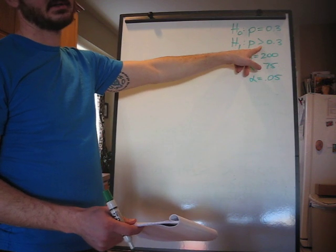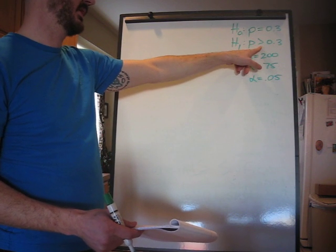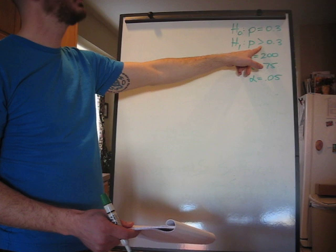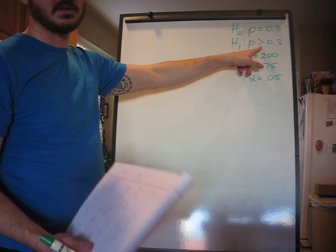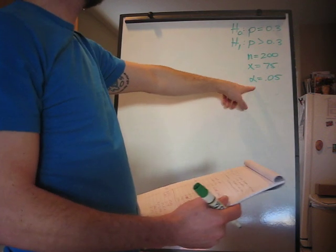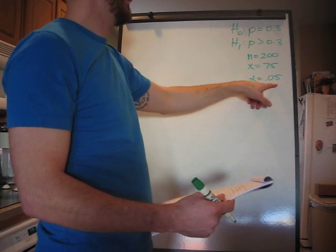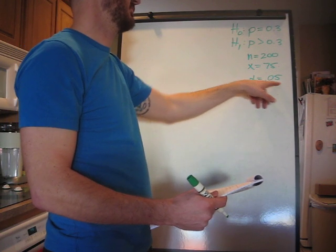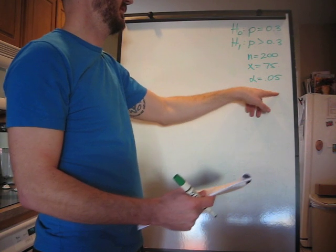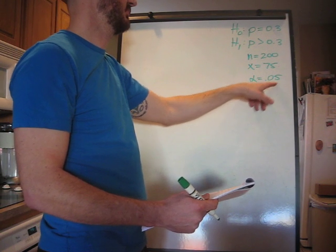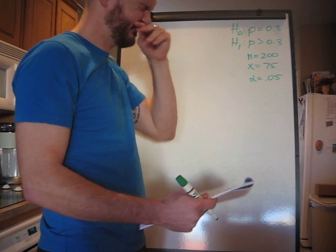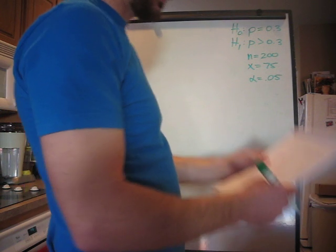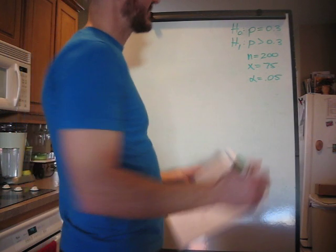This is going to be a right tailed test. You can always tell by your greater than or less than sign. It's going to point to whichever way the tail is. So for a right tailed test, at a confidence value of 0.05, the critical value is 1.645.